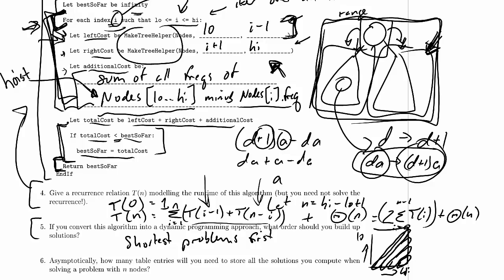As for the stuff up here, well, it is effectively all base cases. Those are all cases where the array is empty, and we know if the array is empty, if there's nothing under consideration, then the cost of the binary search tree is zero.